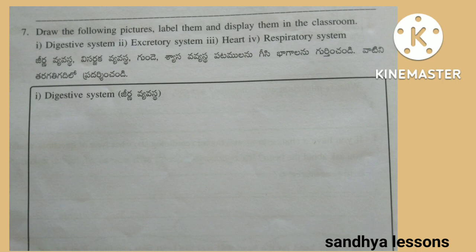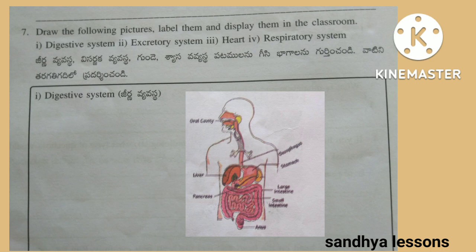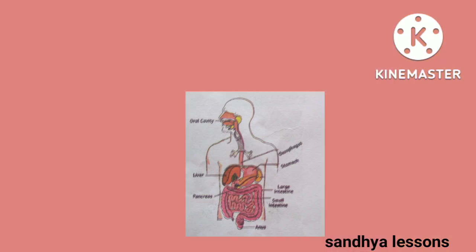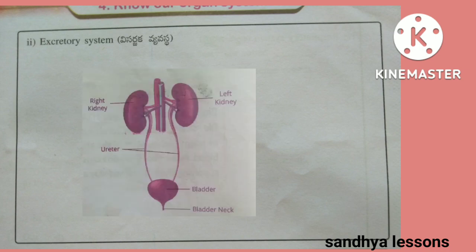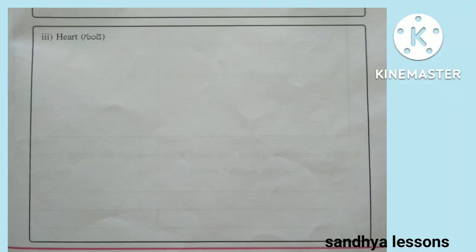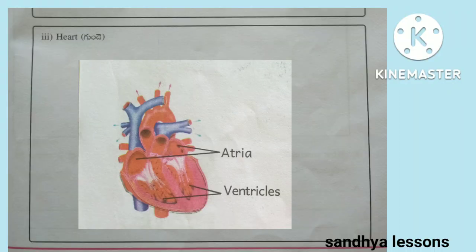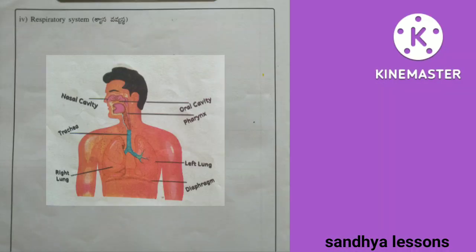Seventh question: Draw the following pictures, label them, and display them in the classroom: digestive system, excretory system, heart, respiratory system.